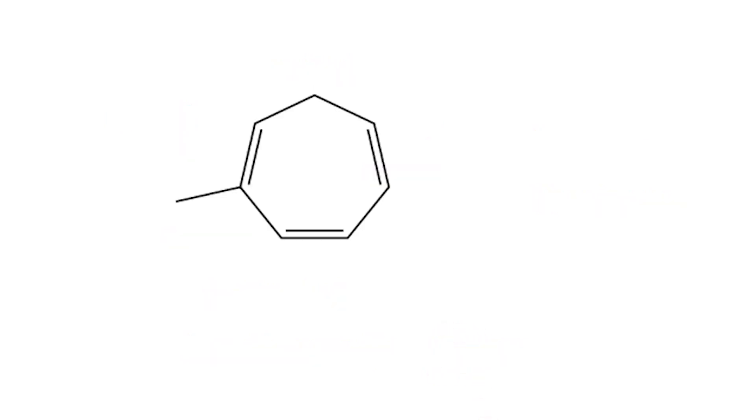Now let's analyze compound B. The molecule is a seven-membered ring, so the base is cyclohept. Inside the ring, we see three alternating double bonds. That means it's a triene.